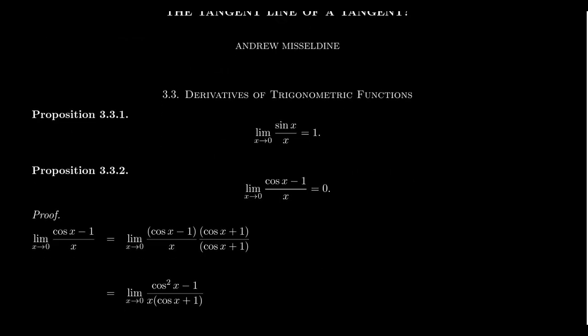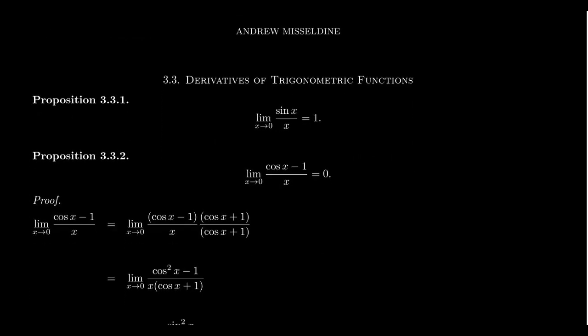You will hopefully recall that previously when we learned about the squeeze theorem, we had learned that the limit as x approaches 0 of sine of x over x is equal to 1. If you don't remember that, click the on-screen link to take a look at the proof of that. What we want to do is push from this and show that the limit as x approaches 0 of cosine x minus 1 over x is likewise 0.